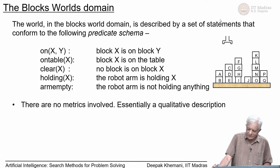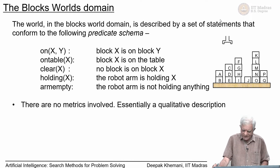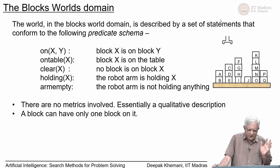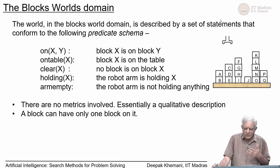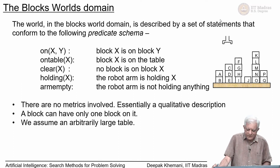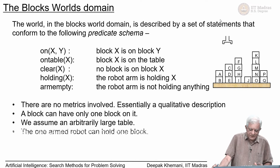There is no constraint on the size of the table — we assume the table is indefinitely large. Blocks can be stacked on top of each other or put on the table. A block can have only one block on it, which is evident from the predicate: on(x, y) can be true for only two specific blocks at a time, at least as an assumption in the STRIPS domain.